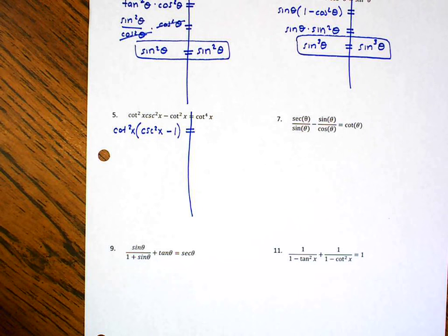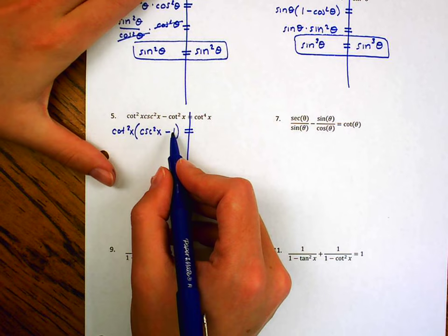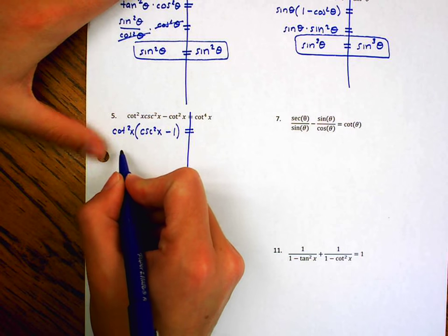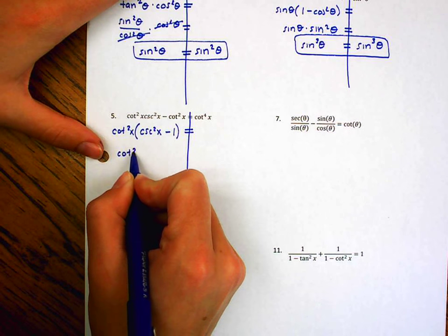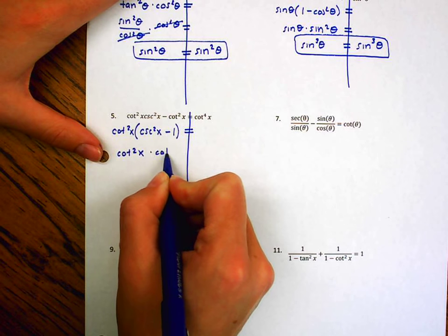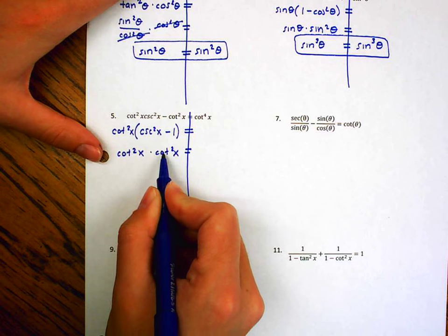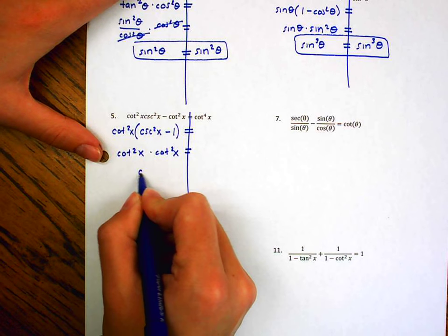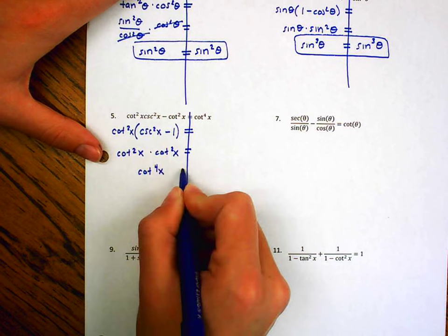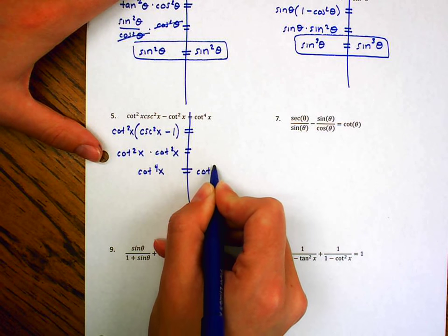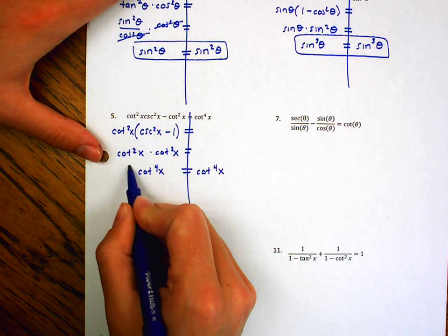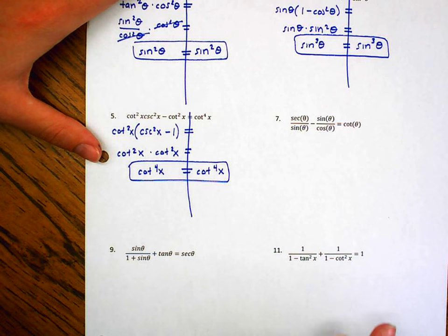Well, now I'm going to see if I can use my Pythagorean identities. Cosecant squared x minus 1, is cotangent squared. Well, this is cotangent times cotangent times cotangent times cotangent. So, that will get me cotangent of x to the fourth power, which is what I have on this side. A little more confident. Try some of these by yourself.